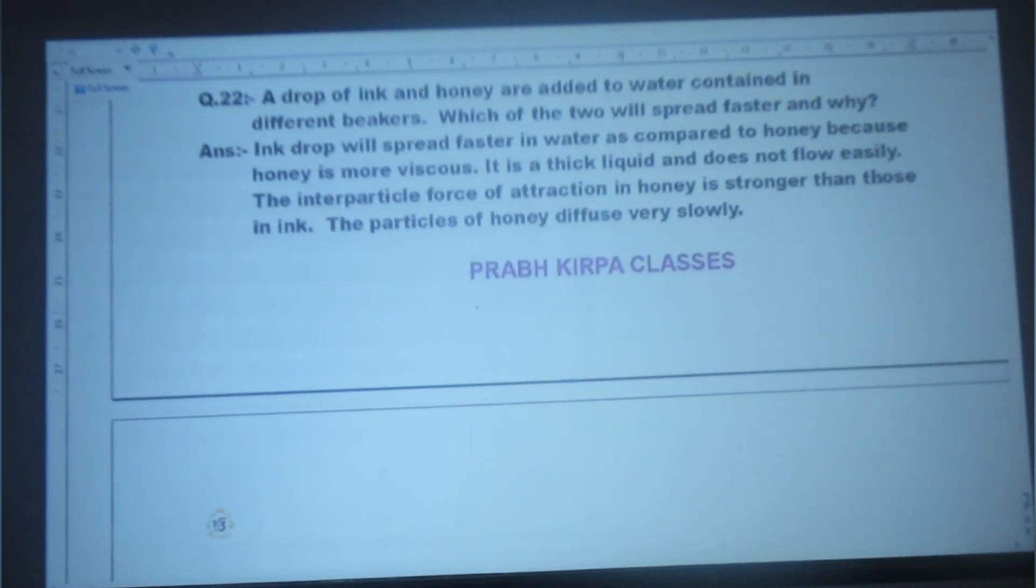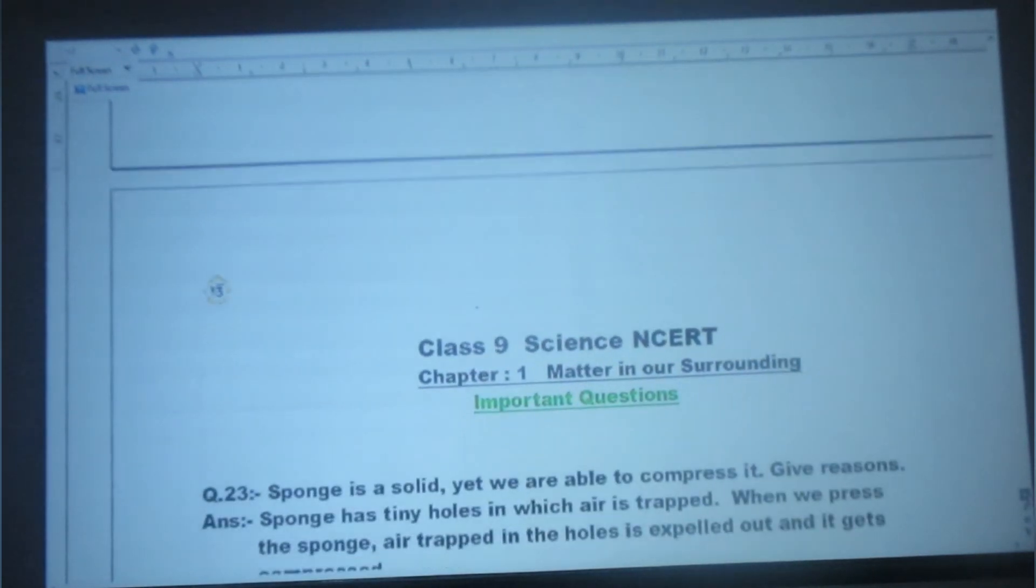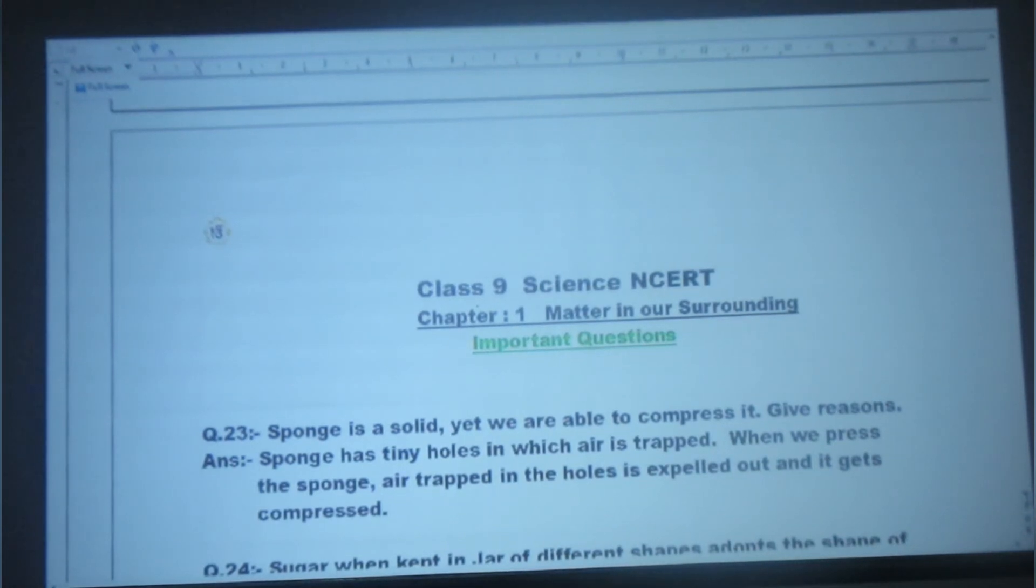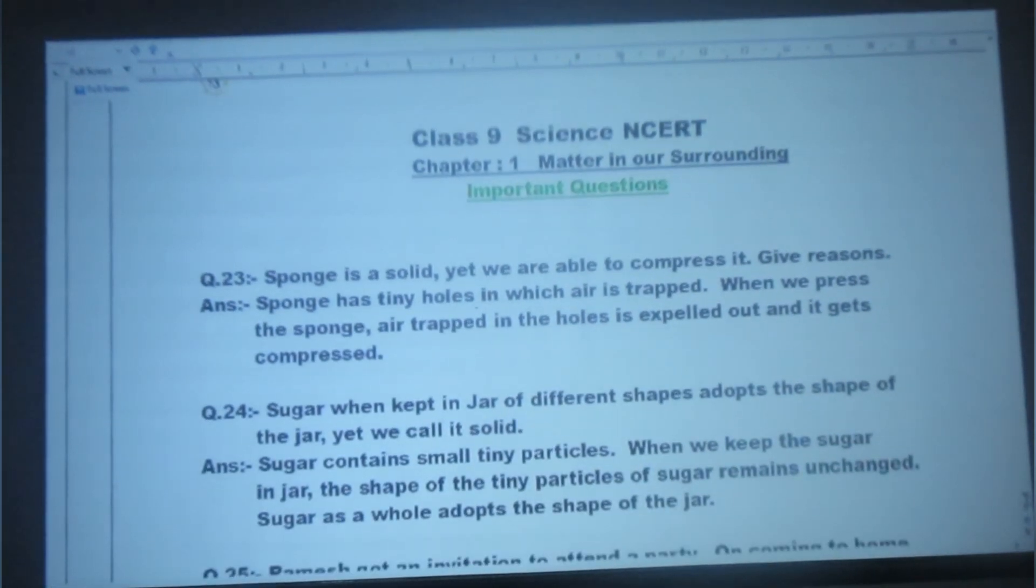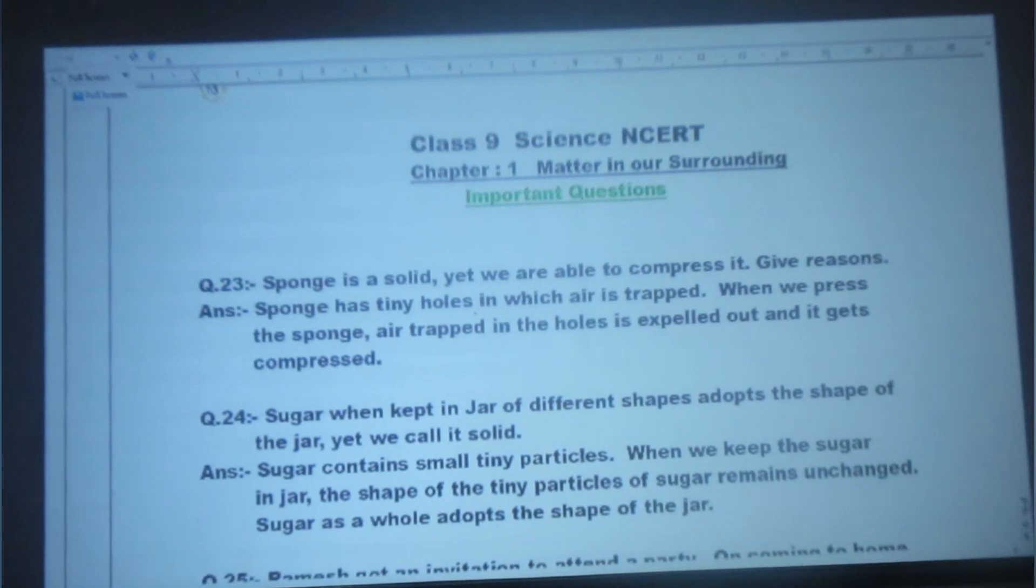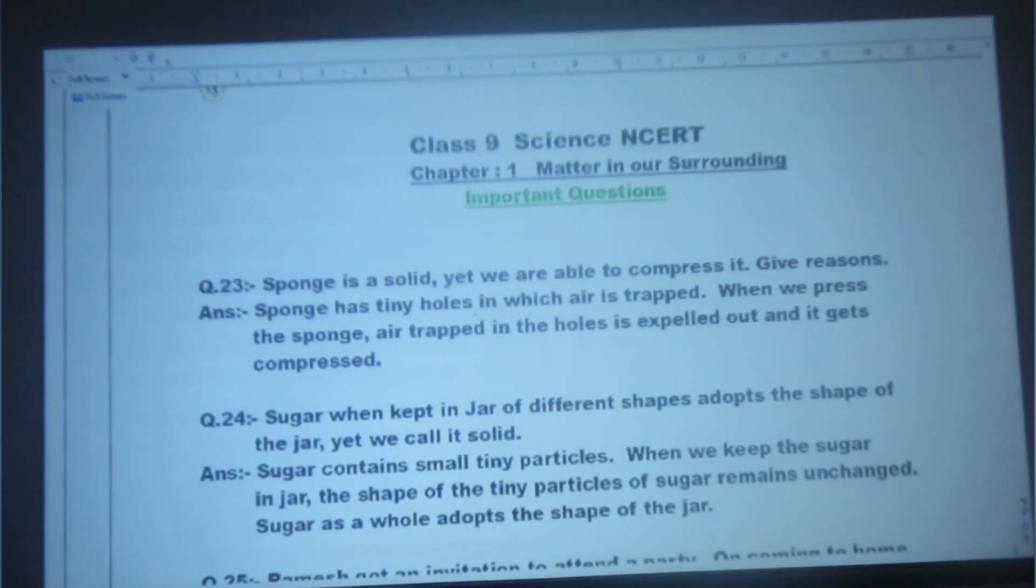Next question: Sponge is a solid, yet we are able to compress it. Give reasons. Answer: Sponge has tiny holes in which air is trapped. When we press the sponge, air trapped in the holes is expelled out and it gets compressed. Sponge has very tiny holes inside in which air is trapped. When we press the sponge, the trapped air comes out and the sponge gets compressed even though it's a solid.